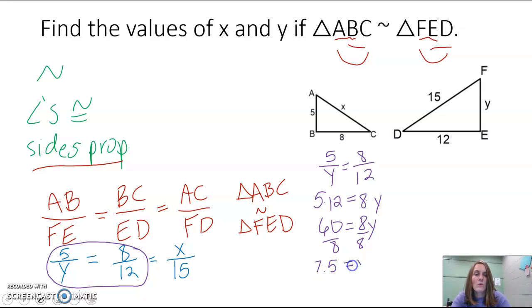So you could write 7.5, or you could reduce 60 over 8, and that would be 15 over 2. But writing 7.5, which I'm sure is natural to most of you, is fine. I should get my highlighter, not an eraser. So 7.5 would be our first answer.